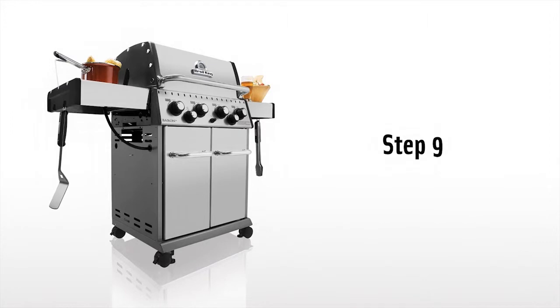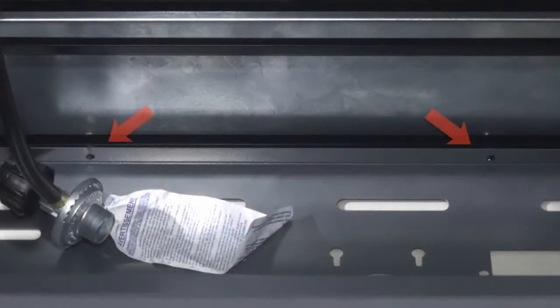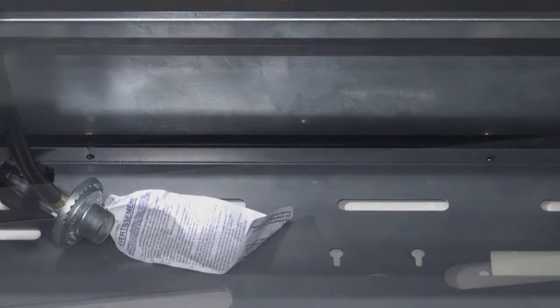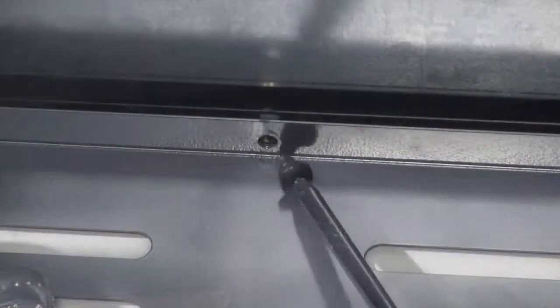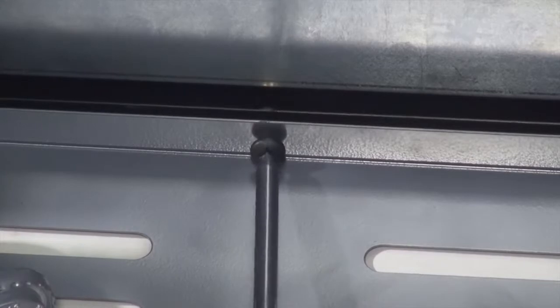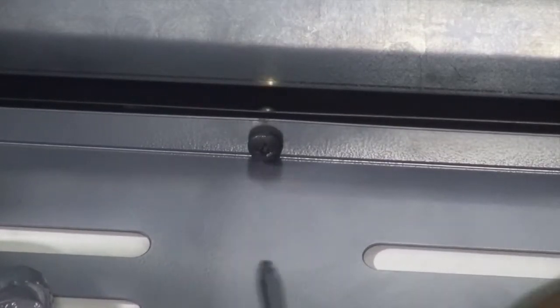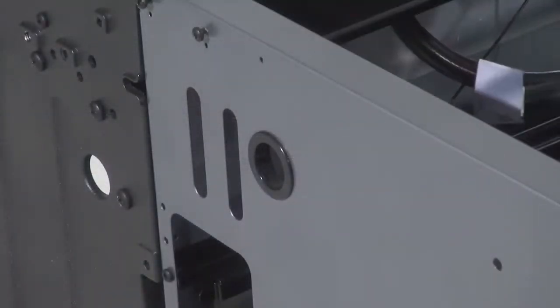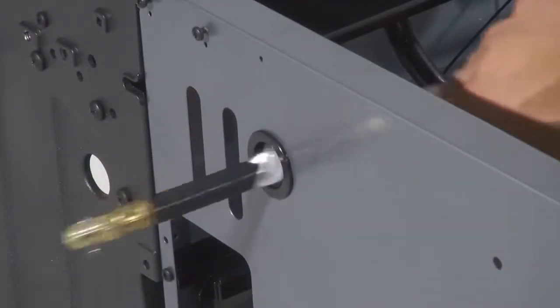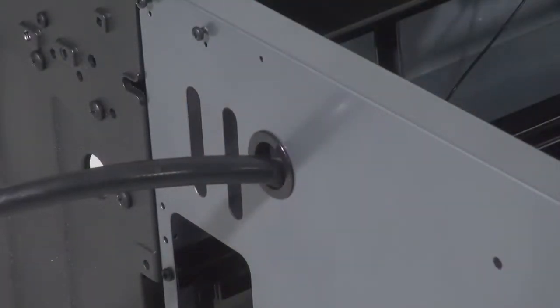Step 9. Attach the rear panel to the base with the two screws provided. Now pull the side burner hose and electrode wire through the hole on the left side of the cabinet.